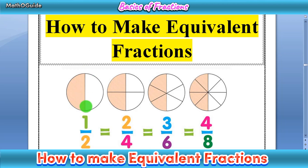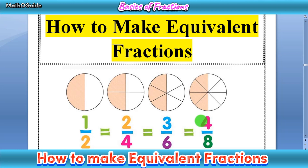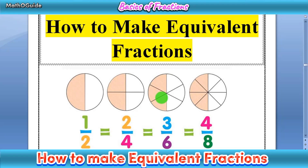In all four diagrams, the numerators are different and the denominators are different, but the colored part is the same. Here we have half a circle, here also half a circle, here also half a circle — 3 out of 6 — and here also half a circle — 4 out of 8. So numerator and denominator can be different, but the main fraction, the main portion, is equal.